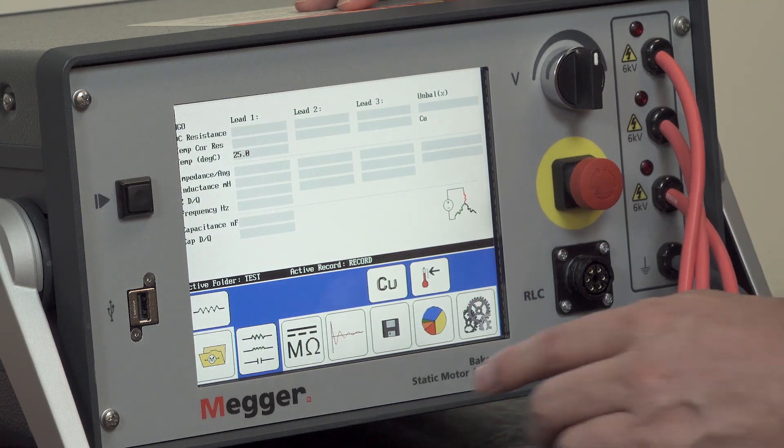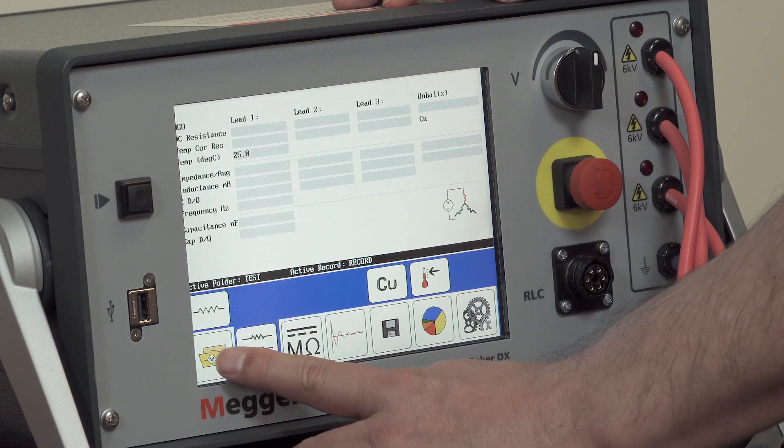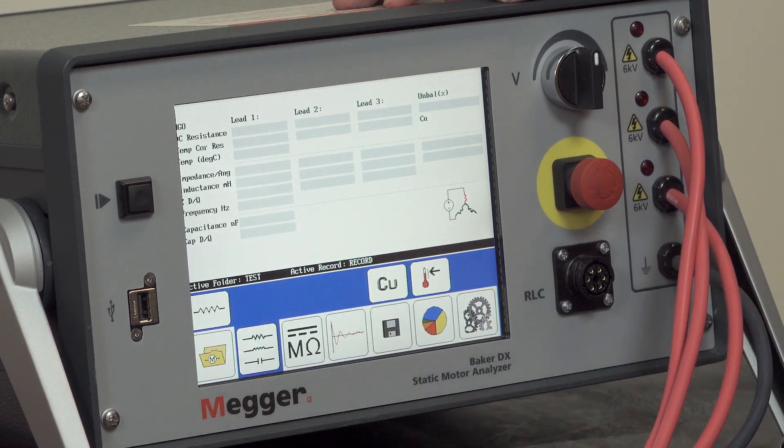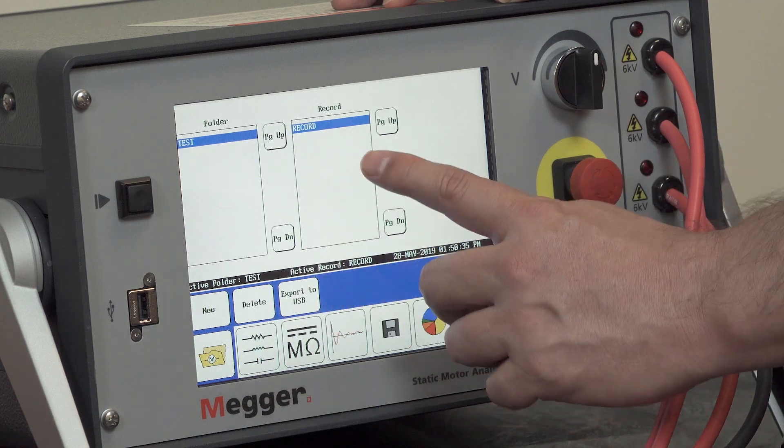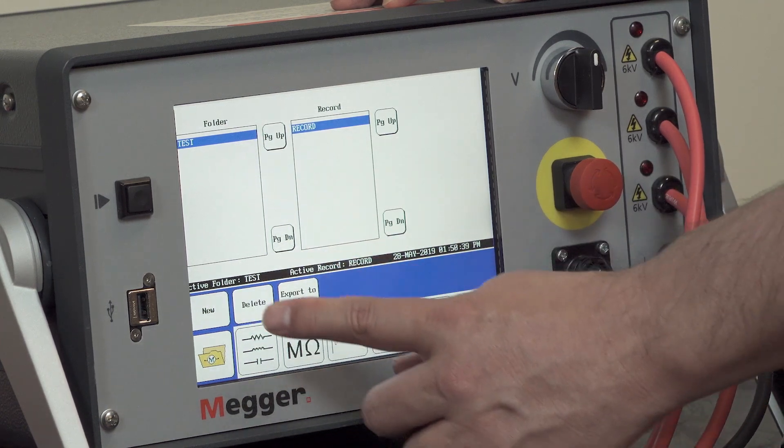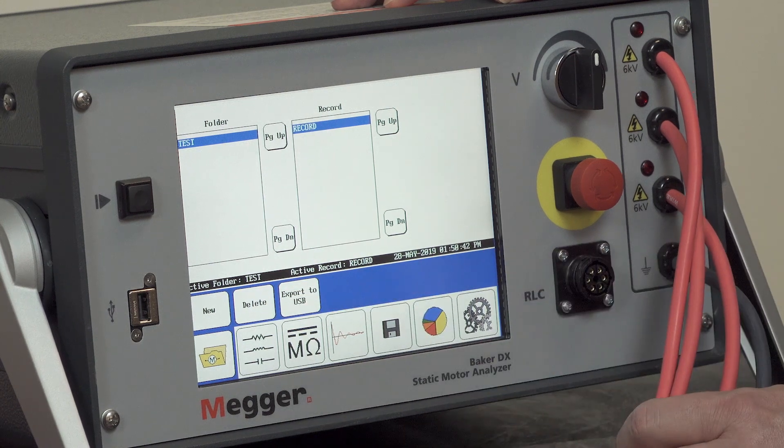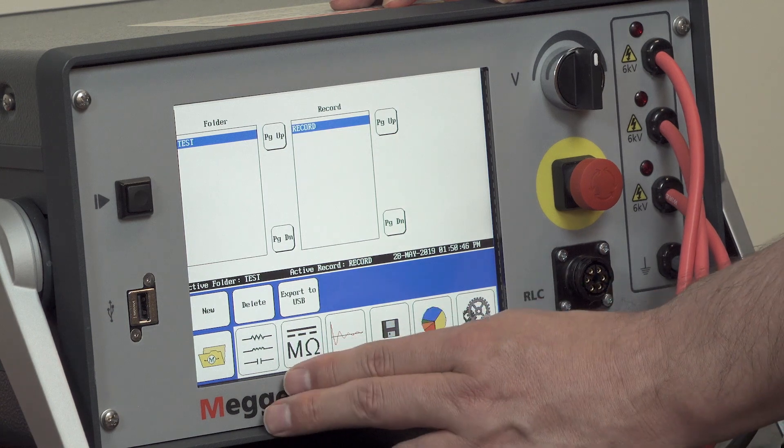Now we'll go through each of the icons and describe their functions. On the left we have the yellow folder that is selected to handle all the file management where we have the folders and records. From here you can create new folders or records, delete existing ones, or export your data off the DX to be used with the surveyor DX software.